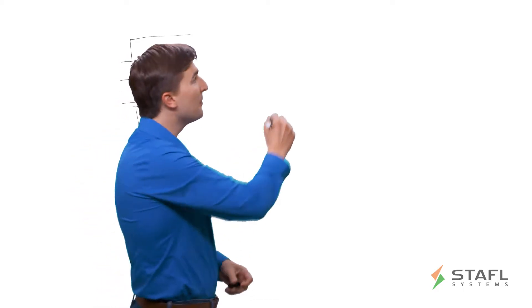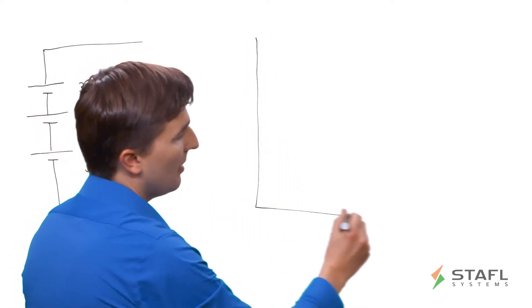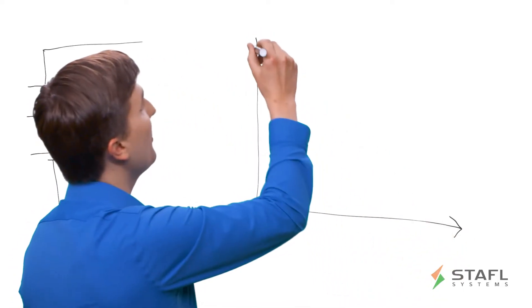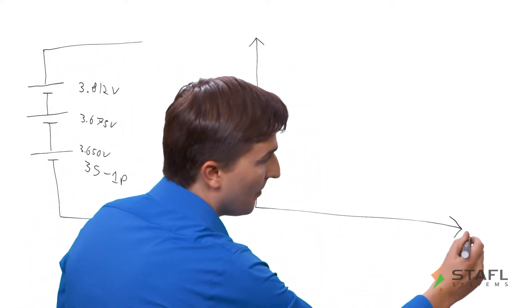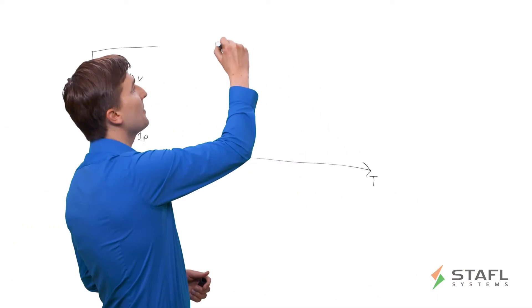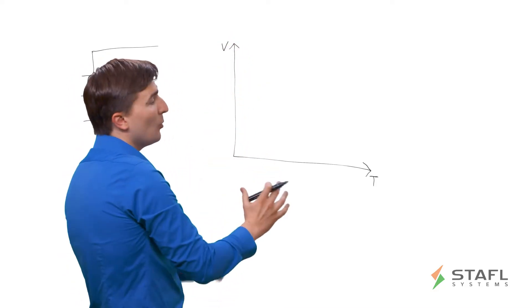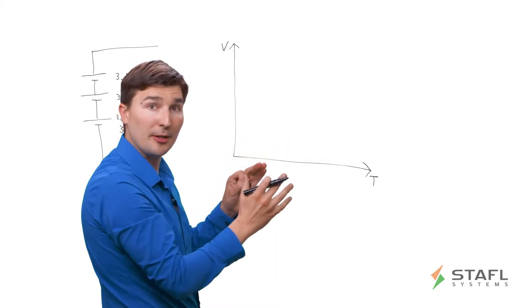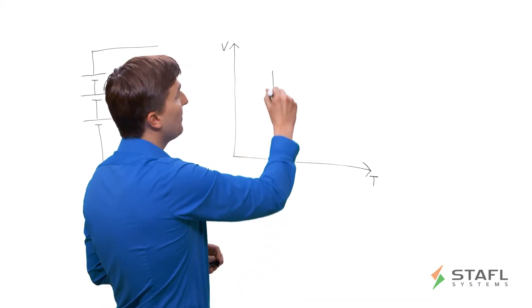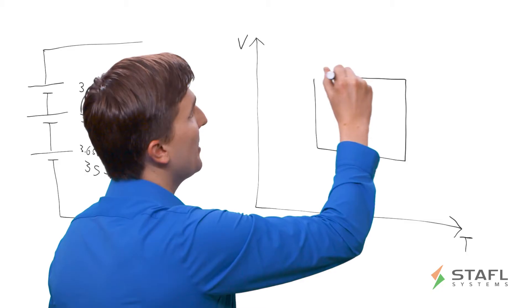Well, if we draw a diagram showing the temperature of the lithium-ion cells on the x-axis and the voltage of the cells on the y-axis, we can diagram out where the safe operating area of the cells are. And that's denoted by this box here.